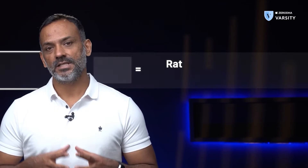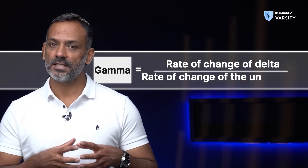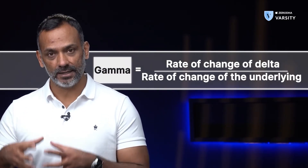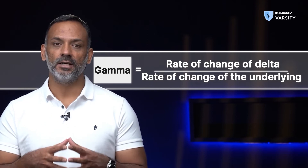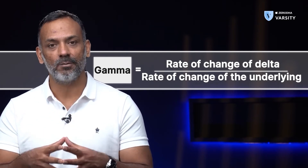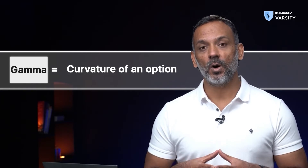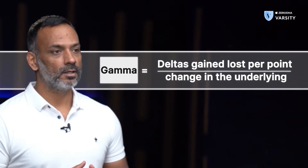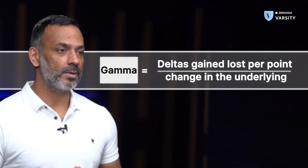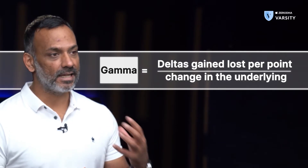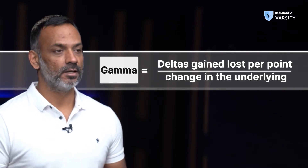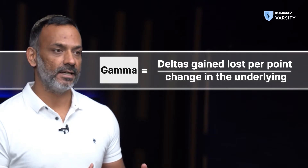The rate of change of delta with respect to the rate of change of the underlying is captured by something called the gamma of an option. Gamma is also called the curvature of an option. Gamma is usually expressed in terms of deltas gained or lost per point change in the underlying, and it is usually a very, very small number.